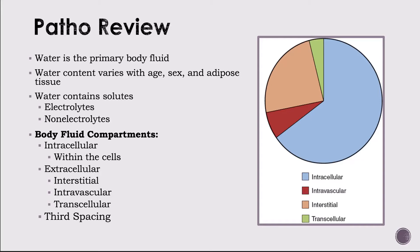Third spacing occurs when fluid moves into an area that makes it physiologically unavailable. For example, fluid buildup in the peritoneal space is called ascites — seen in liver dysfunction and alcoholism. Third spacing can also occur in the pericardial space, such as in pericardial effusion, or into vesicles like blisters during burn wounds. This fluid is trapped in a third compartment, not within the interstitial or intravascular areas.